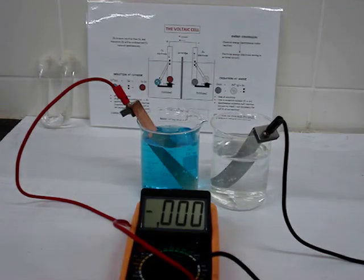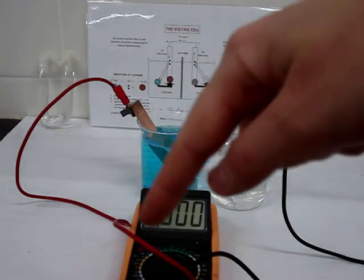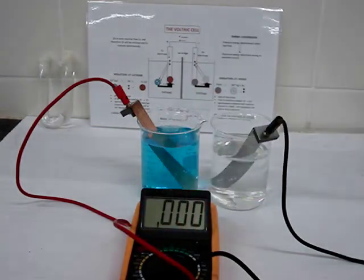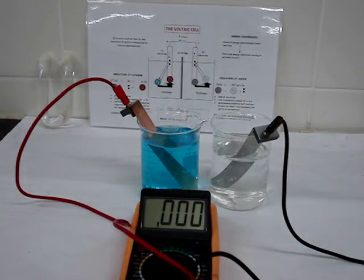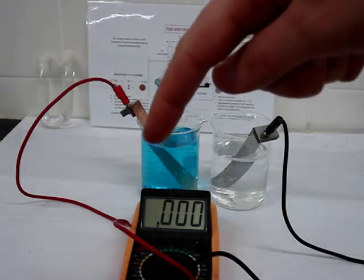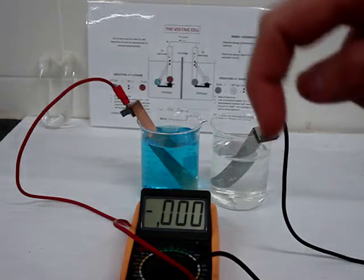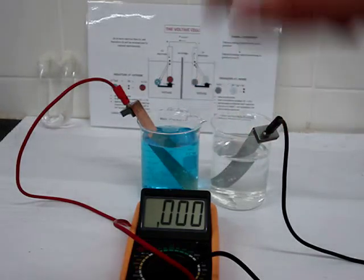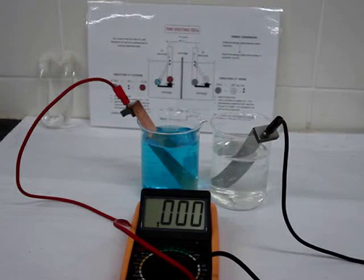Once this is working, we will see that it's working by the fact that a potential difference will be registered on this voltmeter. So why isn't it working yet? The problem is we don't have a complete circuit. Notice that in between the two electrodes and the solutions, there's a gap.